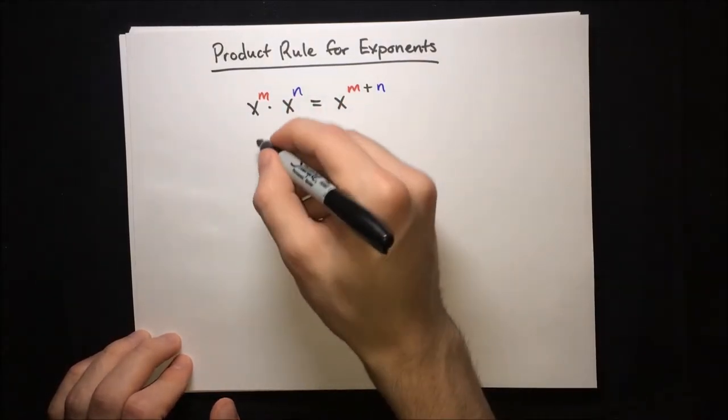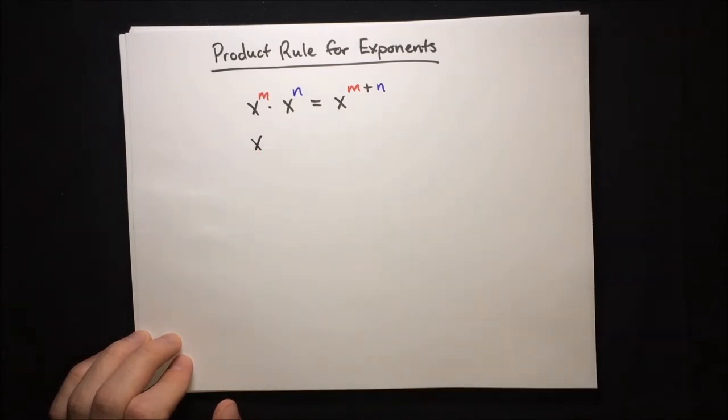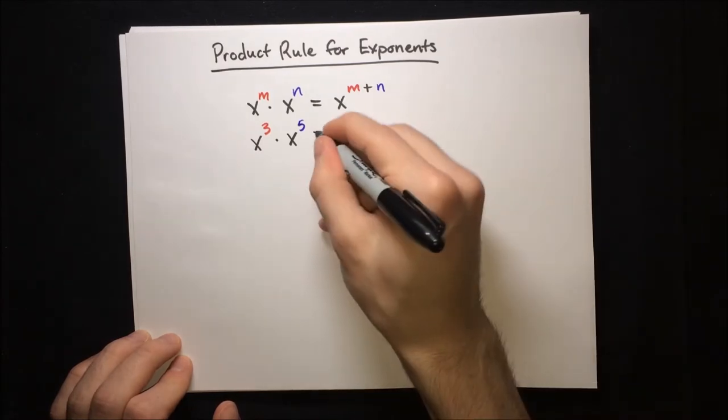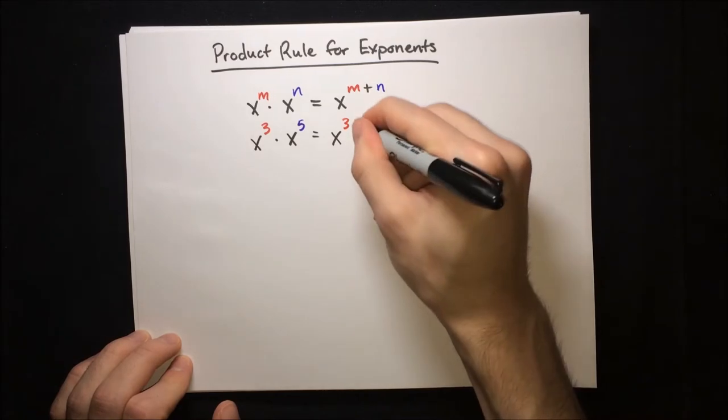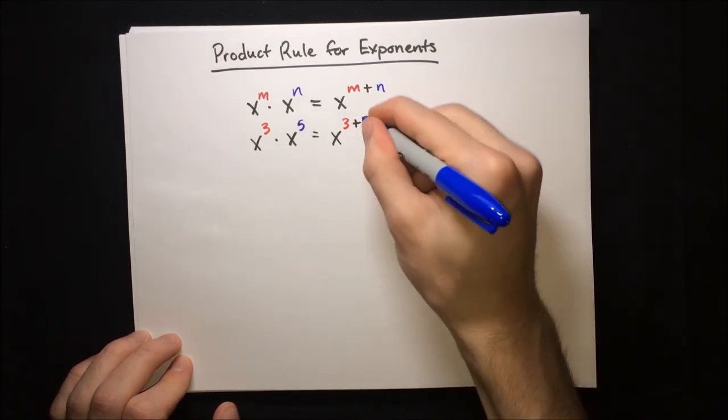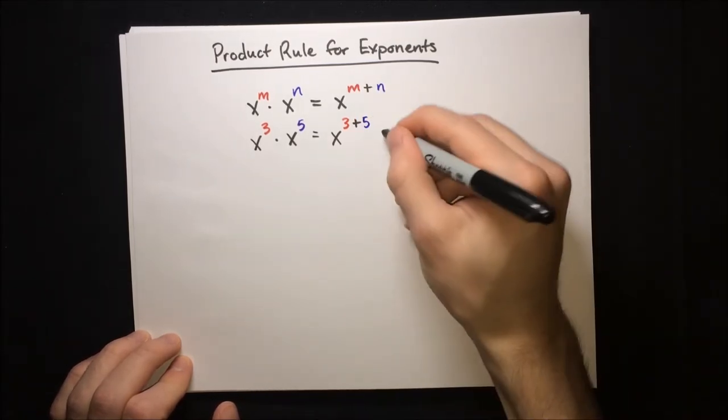So a more concrete example, like if you've got x to the third power times x to the fifth power, to get the result for that, that's just equal to x to the power of three plus five. So that's really just x to the power of eight.